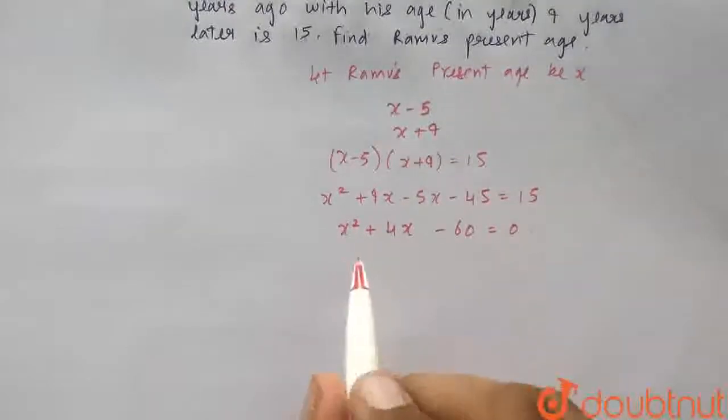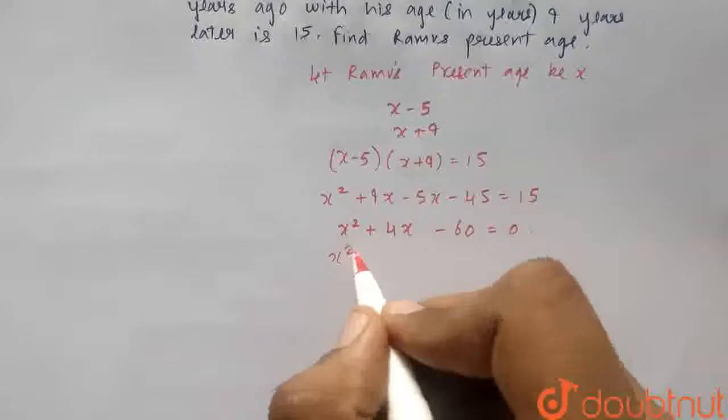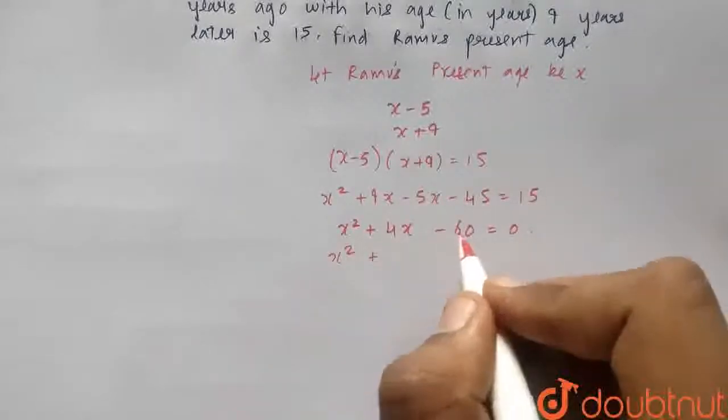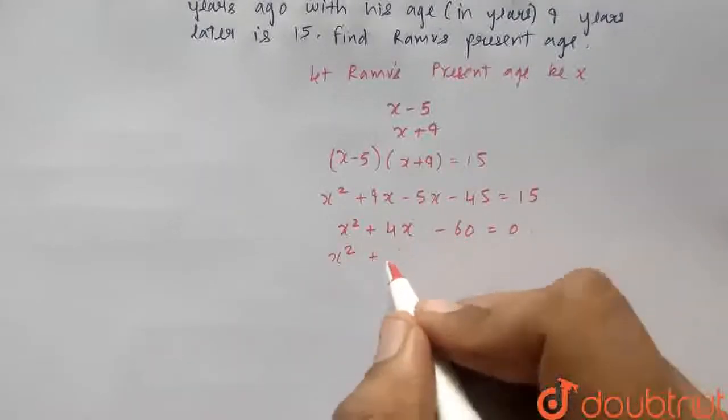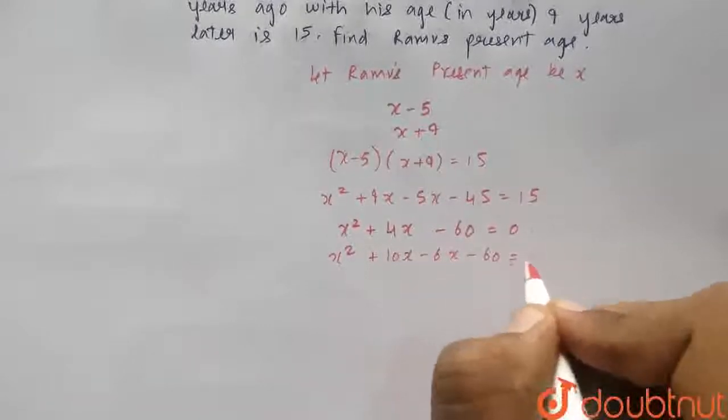I will split the middle term using the factorization method. It is basically x² plus 60, you can write it as 10 into 6. So, 10x - 6x - 60 = 0.